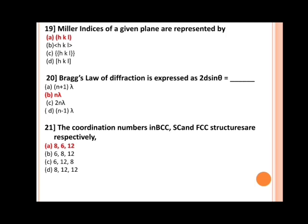Next, Miller indices of a given plane are represented by. As we all know that Miller indices indicate the round bracket. So here option A is the correct answer because hkl is in the round bracket. Next, Bragg's law of diffraction is expressed as 2d sinθ = dash. Options are: a) (n+1)λ, b) nλ, c) 2nλ, d) (n-1)λ. The correct answer is b, nλ.